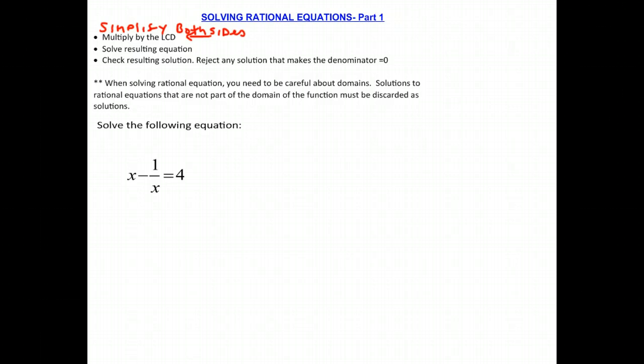So let's take a look at this. We have x minus 1 over x equals 4. And what we really want to do is simplify both sides. The right side is obviously simplified. The way to simplify the left side is to remove the denominator. And we do that by multiplying by the least common divisor, or least common denominator, which in this case would be x. So if we multiply both sides by x.